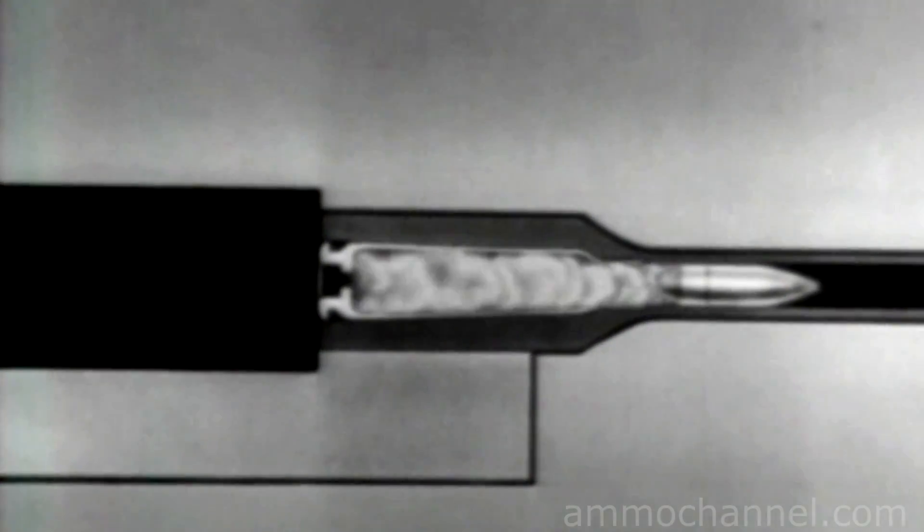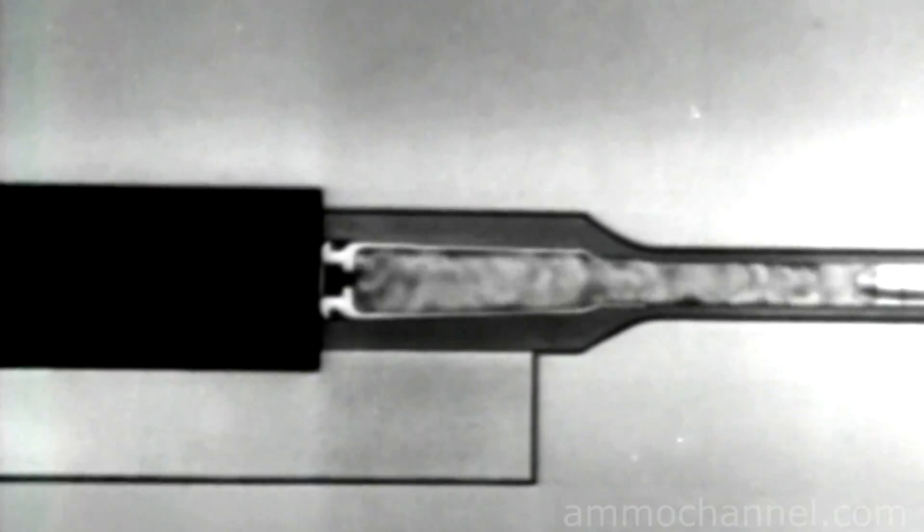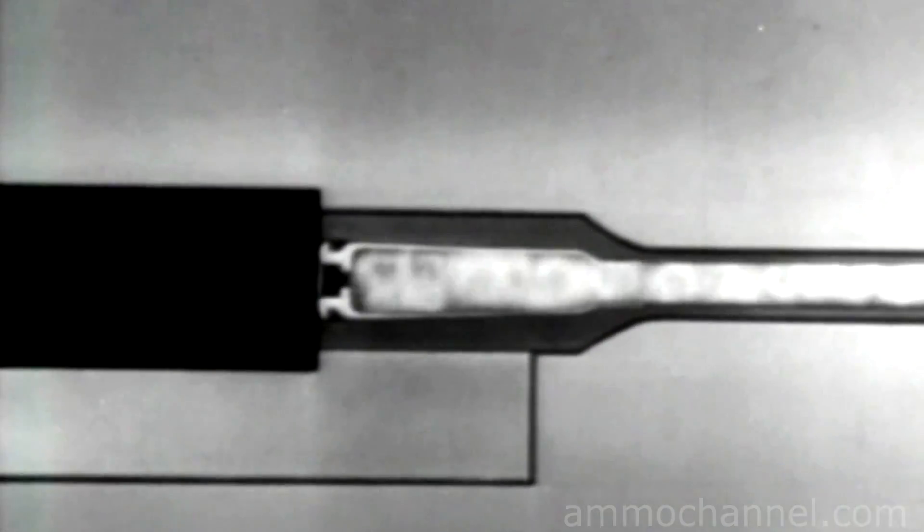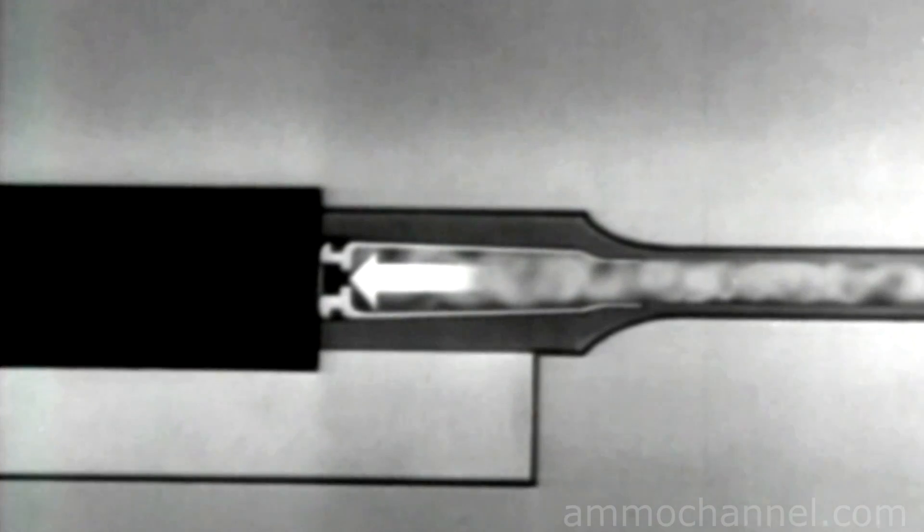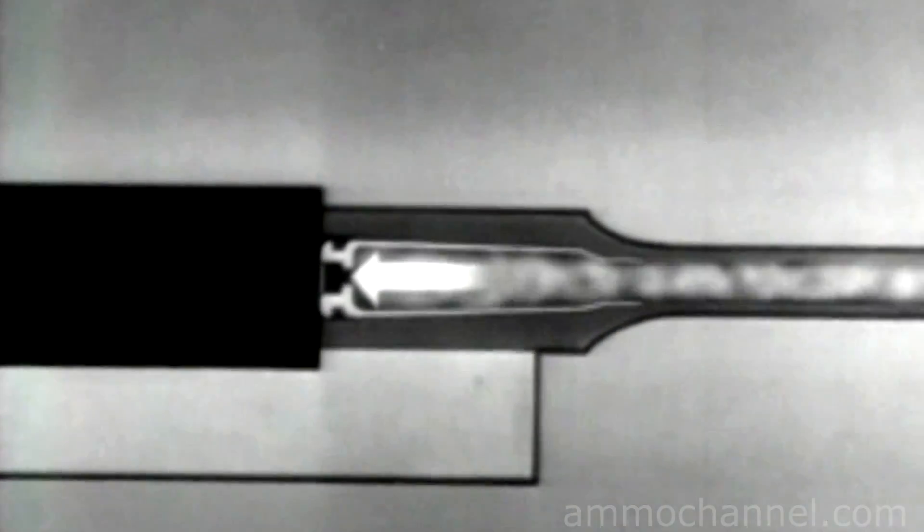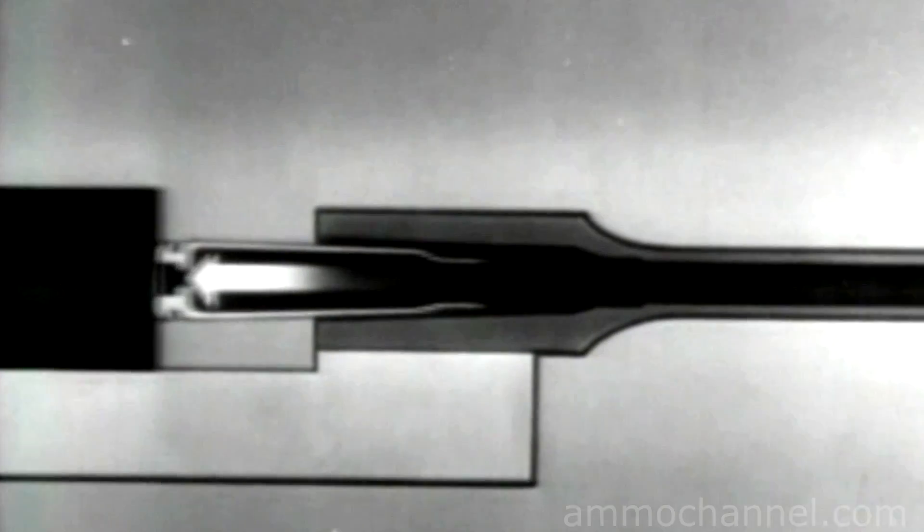The second way of using the power of the explosion to operate the bolt is called blow-back operation. As the expanding gases drive the bullet out through the barrel, they also push the cartridge case back hard against the face of the bolt. If this pressure is used to blow the bolt open, we have a blow-back-operated weapon.